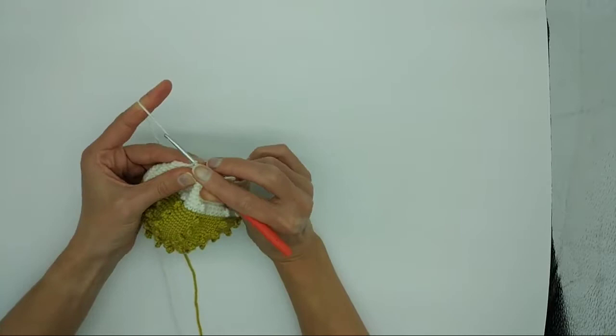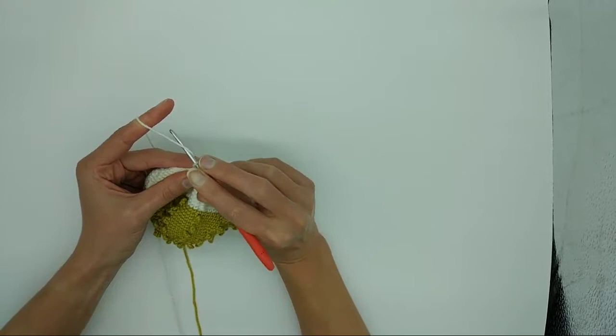So we yarn over, pull up a loop once, yarn over, pull through the first loop on the hook only twice.